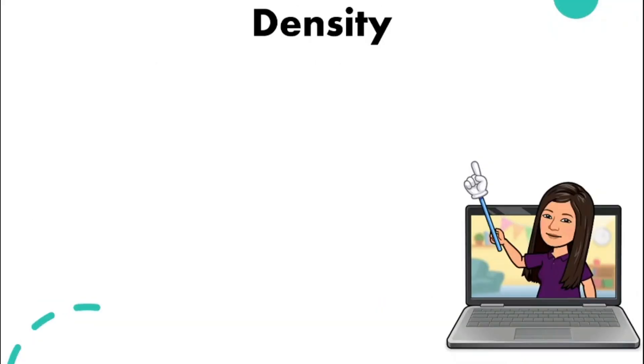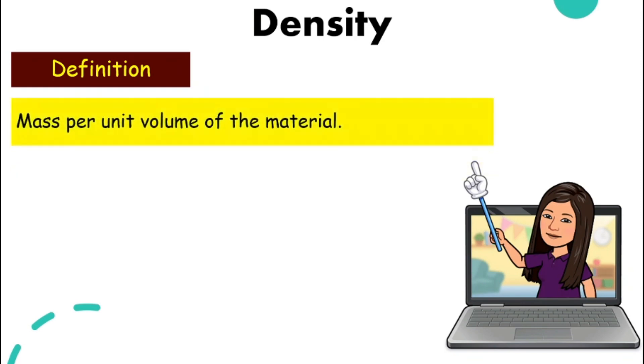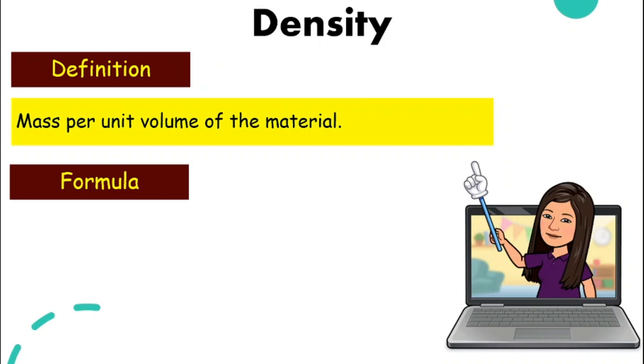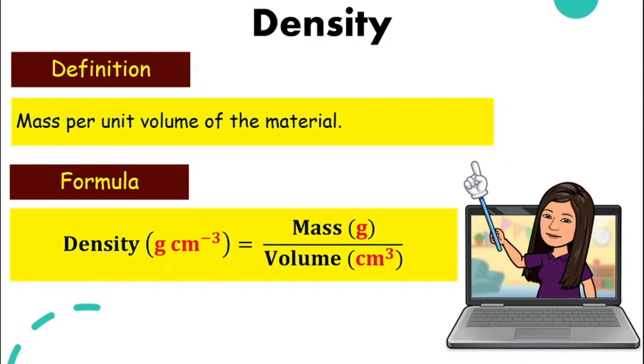That is what we are going to discuss in this video. Well, by definition, density means mass per unit volume of the material. And the formula will be mass divided by volume. I need you to pay attention to the unit.